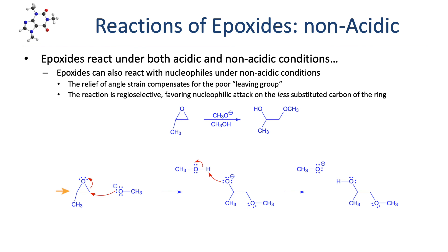Once the nucleophile attacks, the ring is opened, resulting in the formation of an alkoxide. The alkoxide is then protonated either by a solvent molecule — here methanol — or by an external acid added later.